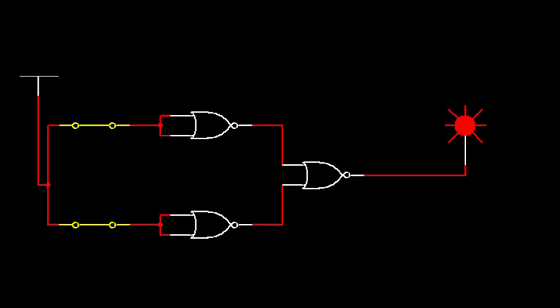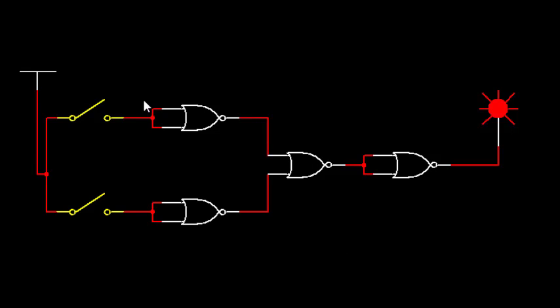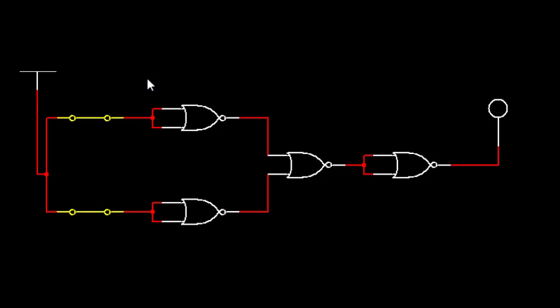Finally, we have four NOR gates working as a NAND gate. Input 0 0 gives output 1; 0 1 gives output 1; 1 0 gives output 1; and 1 1 gives output 0. These four NOR gates are acting as a NAND gate. This is NOR as NAND.